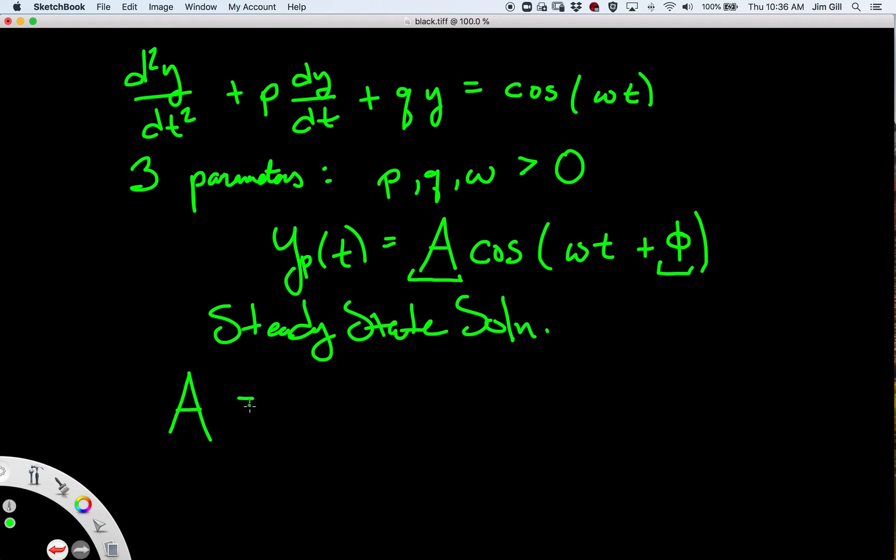The amplitude can be given solely in terms of p, q, and omega. The amplitude is equal to 1 divided by the square root of the quantity q minus omega squared, squared, plus p squared omega squared.